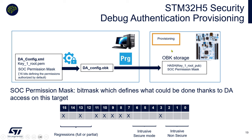The provisioning must be done in provisioning state. It works via an XML file containing the link to the root key and the permission mask. The Trusted Package Creator builds a binary file in a specific format recognized by the programmer and by the target, to be provisioned in the OB key storage. Once provisioned, you can close the device and use those credentials to reopen it. The SOC permission mask is a bitmask providing the capabilities of the chip — you can allow regression, intrusive secure mode, intrusive non-secure mode at different levels.